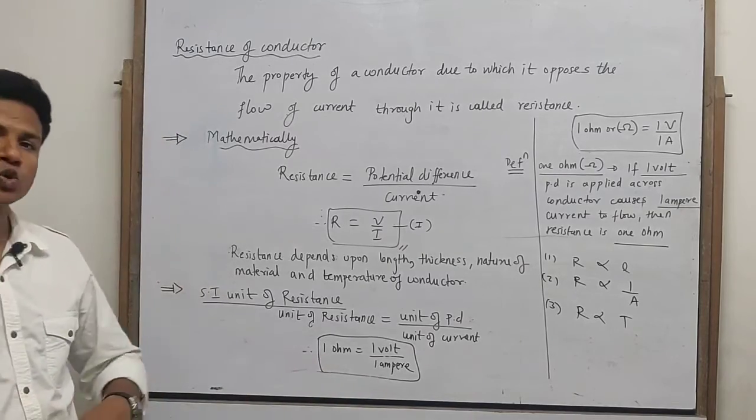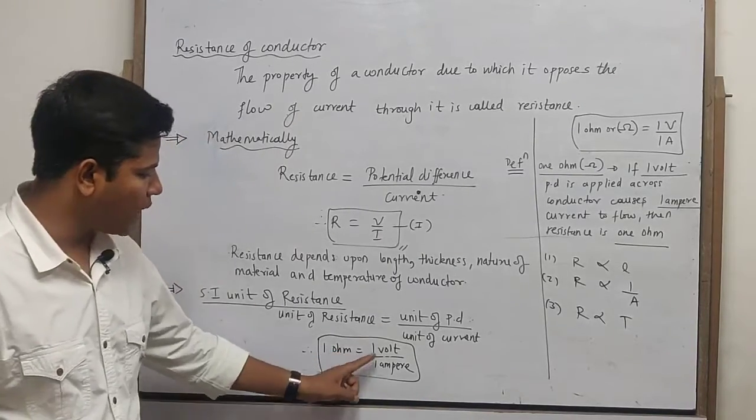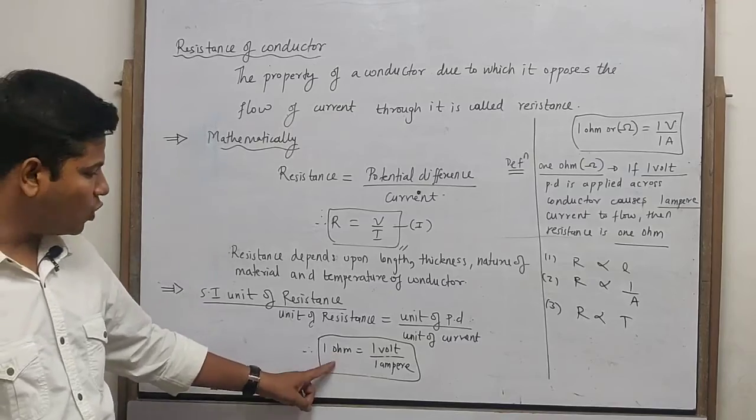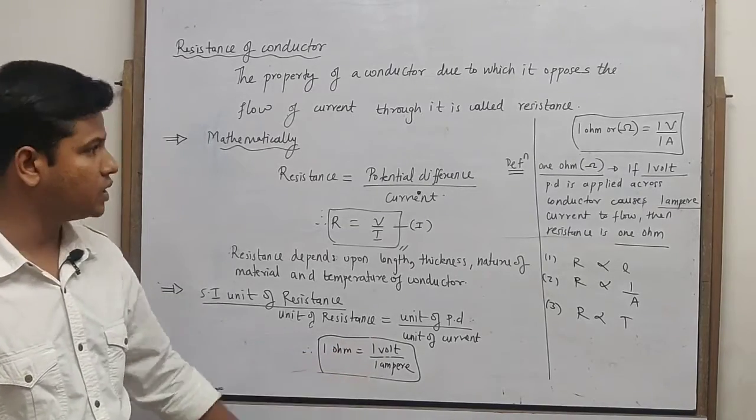Volt per ampere is called ohm, because this concept was discovered by Ohm. So volt per ampere is nothing but ohm, and one ohm equals one volt upon one ampere.